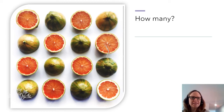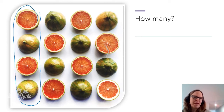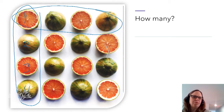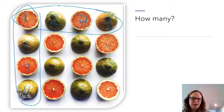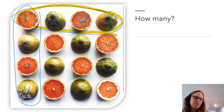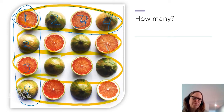I am guessing that some of you may have looked at each row and counted: one, two, three, four in the first row, and one, two, three, four in the next. So if there's four and four in each row, that means there are four groups of four — one group of four, two groups of four, three groups of four, and four groups of four.